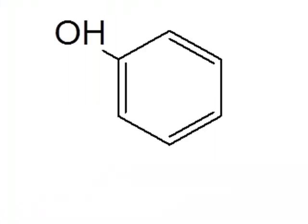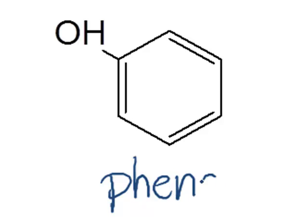Now name this molecule. You should immediately recognize that this molecule is phenol — a benzene ring connected to an OH. Don't try to name it as an alkene and an alcohol, because remember that the benzene ring doesn't have any true double bonds.